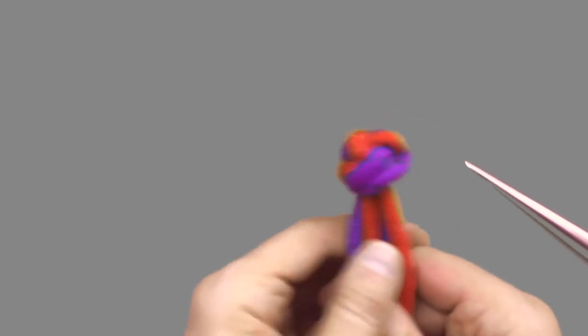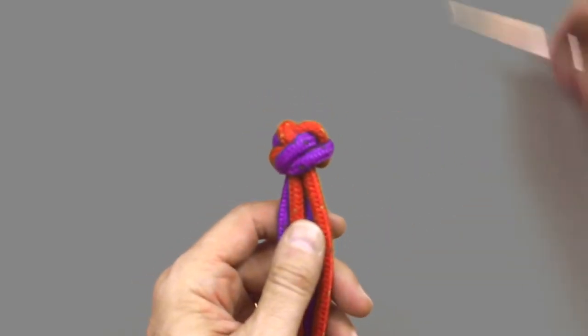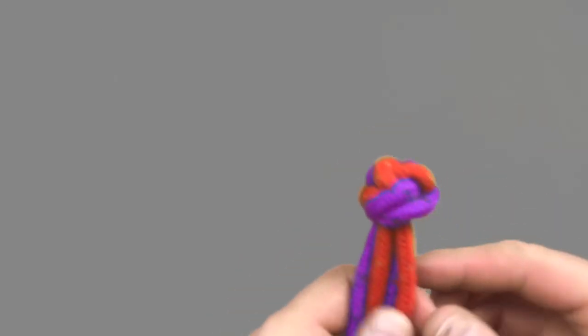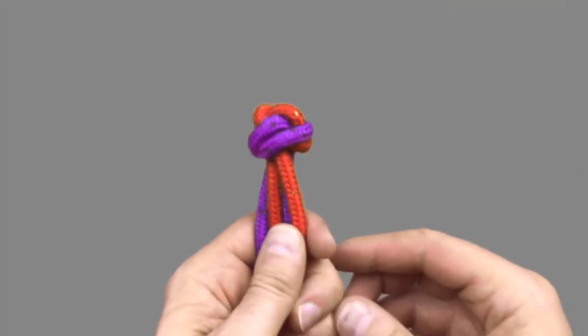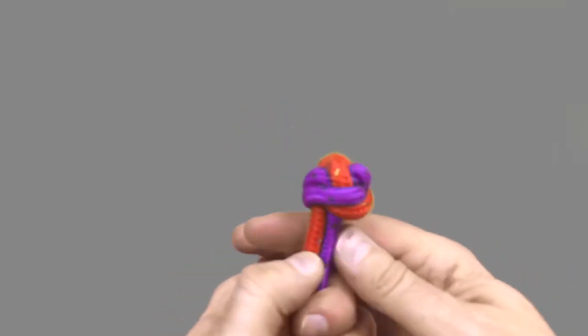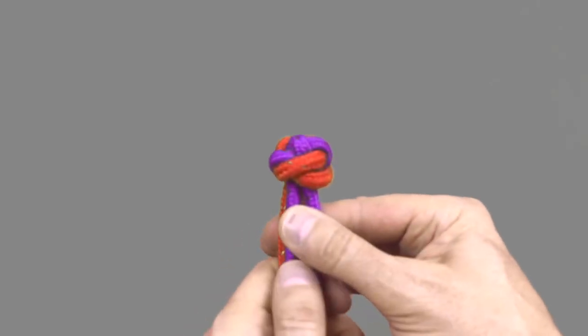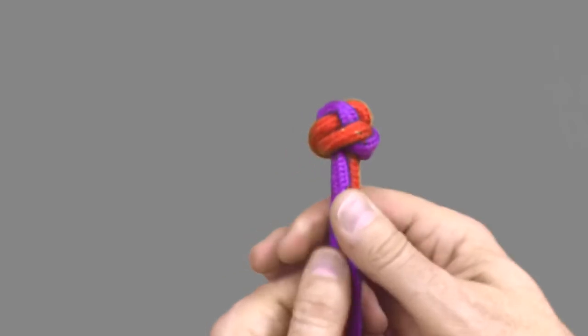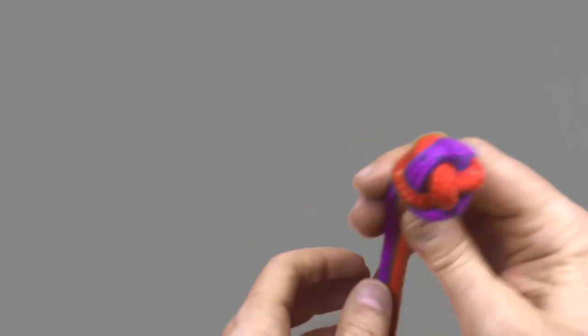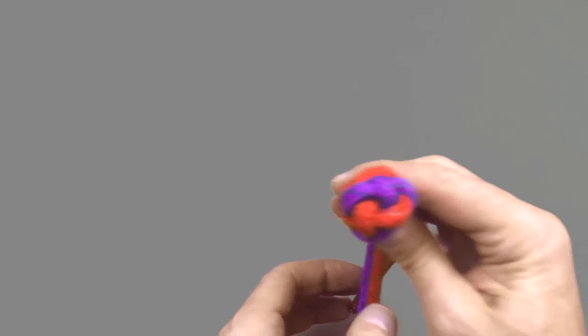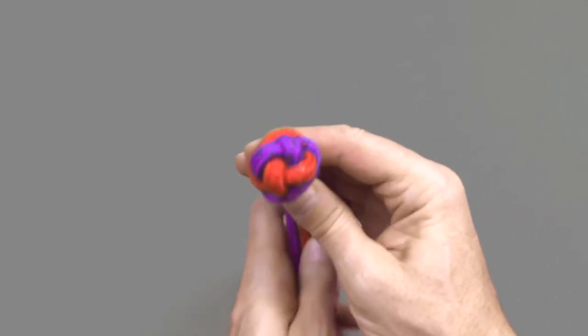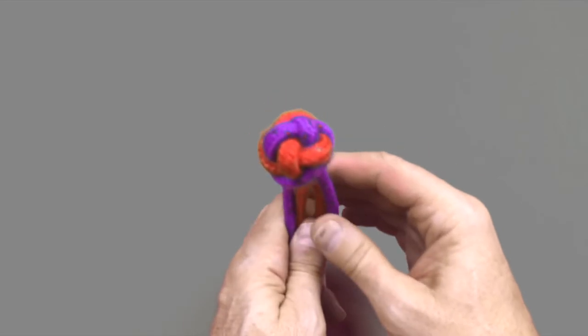With the knot complete, now let's take a look at the construction so you can check that you've done it correctly. Remember we did two wall knots and you'll see that at the bottom of the knot, when looking at it from the side, you'll see both the purple and red lines have the parallel lines of the two wall knots. And when you look at it from the top of the knot, you'll see that both the red and purple lines cross over each other from the two crown knots.